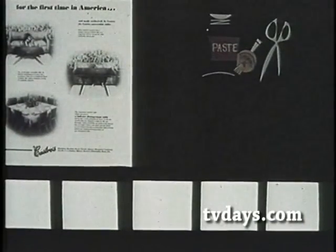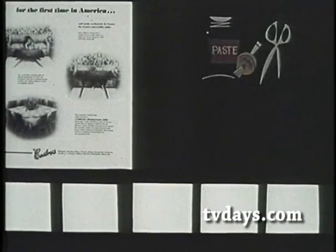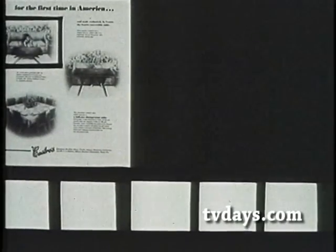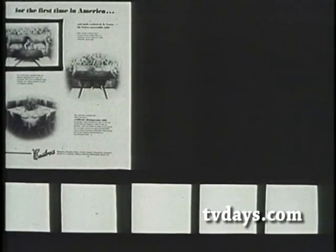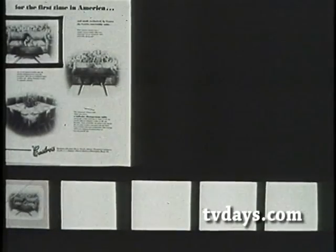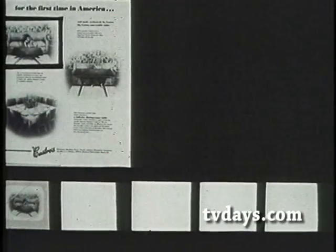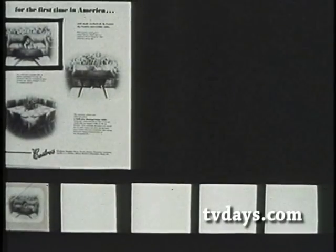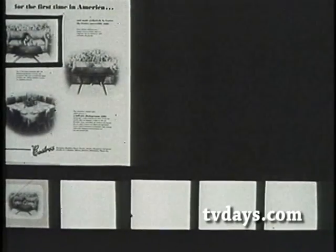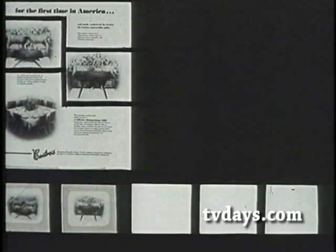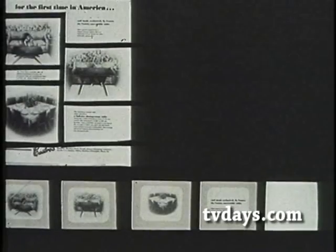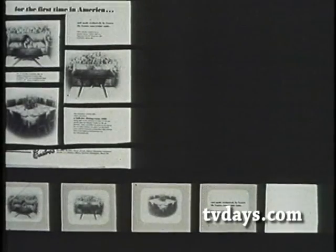Here is what we do. First, we cut from our print ad this picture of the table as a cocktail table. We cut it out and paste it on the first of our white cards. This now becomes the first still of our commercial — the first thing the viewer will see. Now we cut another portion of the print ad and make it panel two. And here's what happens to the rest of the print ad as it becomes a television storyboard.